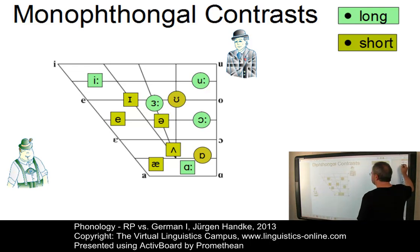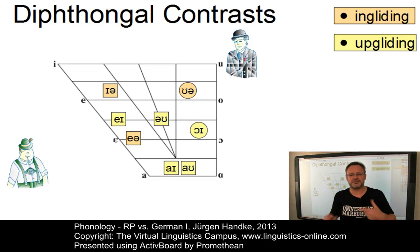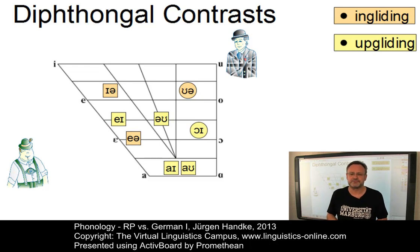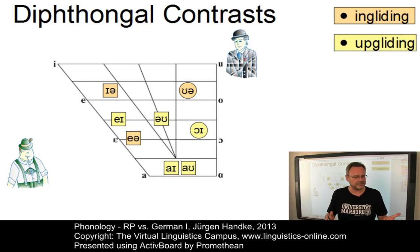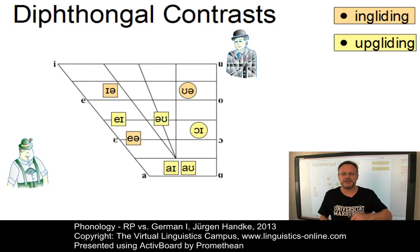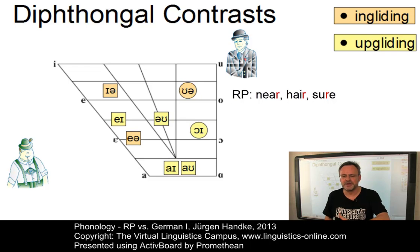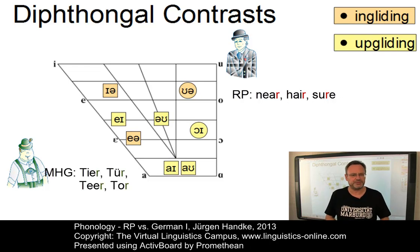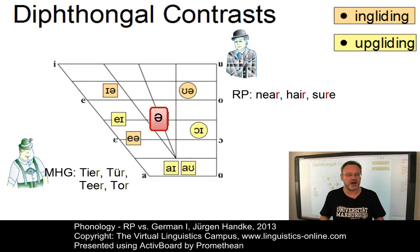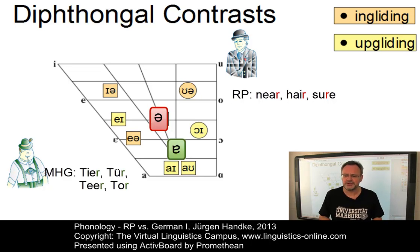Let us now turn our attention to the diphthongs of RP and the particular contrasts between RP and German. Both present-day English RP and German have eight diphthongs, among them several upgliding diphthongs. The remaining diphthongs all occur in words with a post-vocalic orthographical R — in RP we have things like 'near', 'hare', and 'sure'. Whereas the R triggers a final schwa as diphthongal offset in RP, resulting in a true ingliding diphthong, it triggers the central A in German, making the diphthong down-gliding.